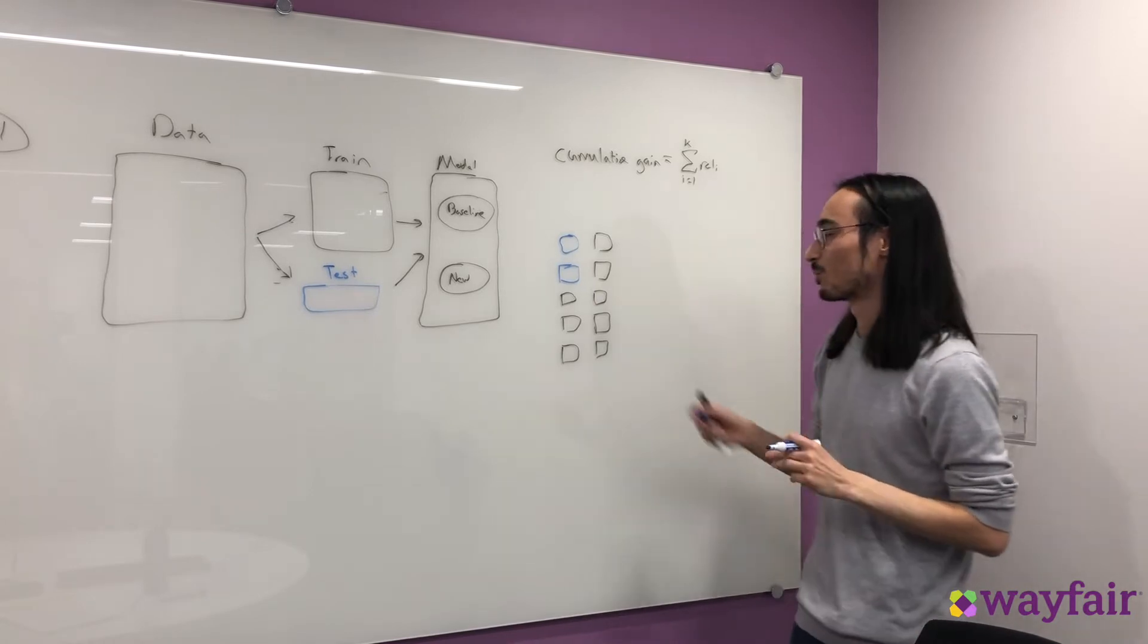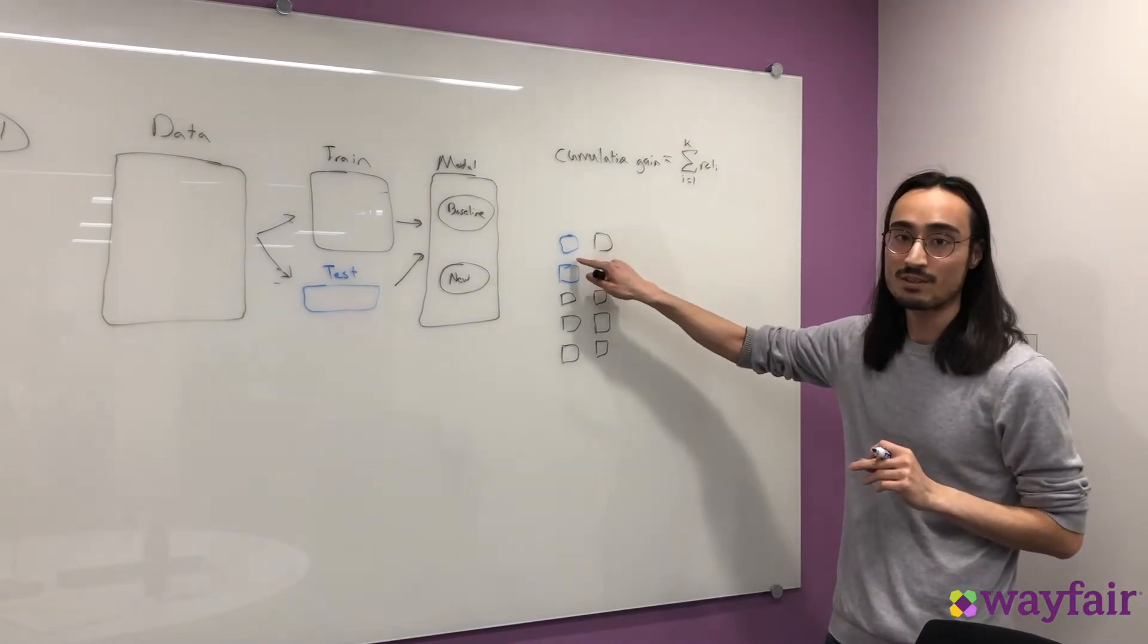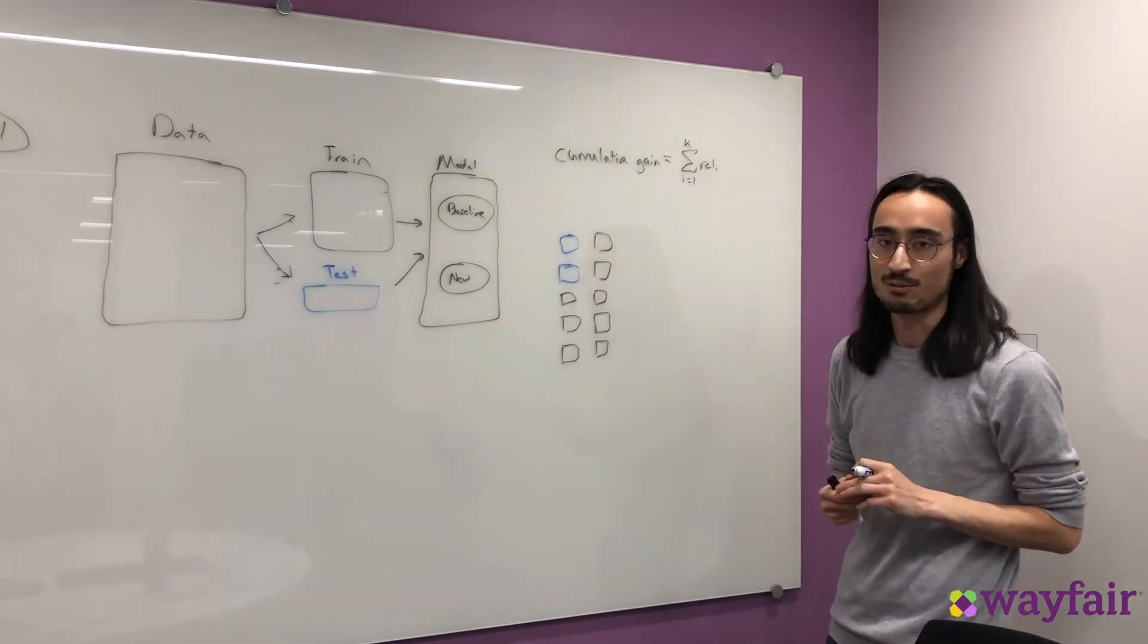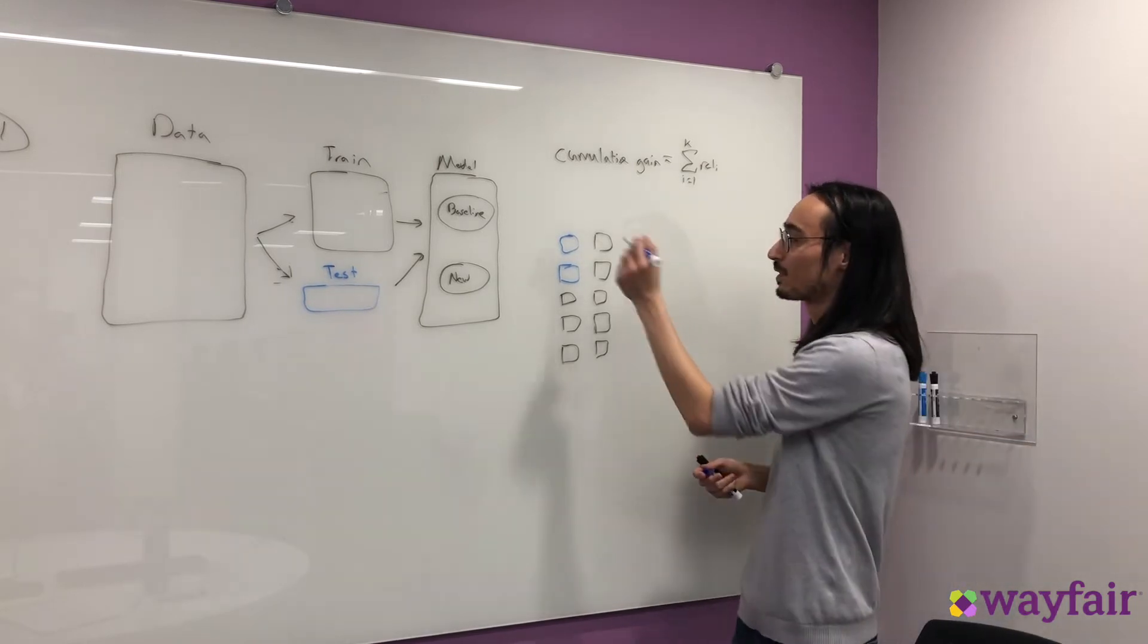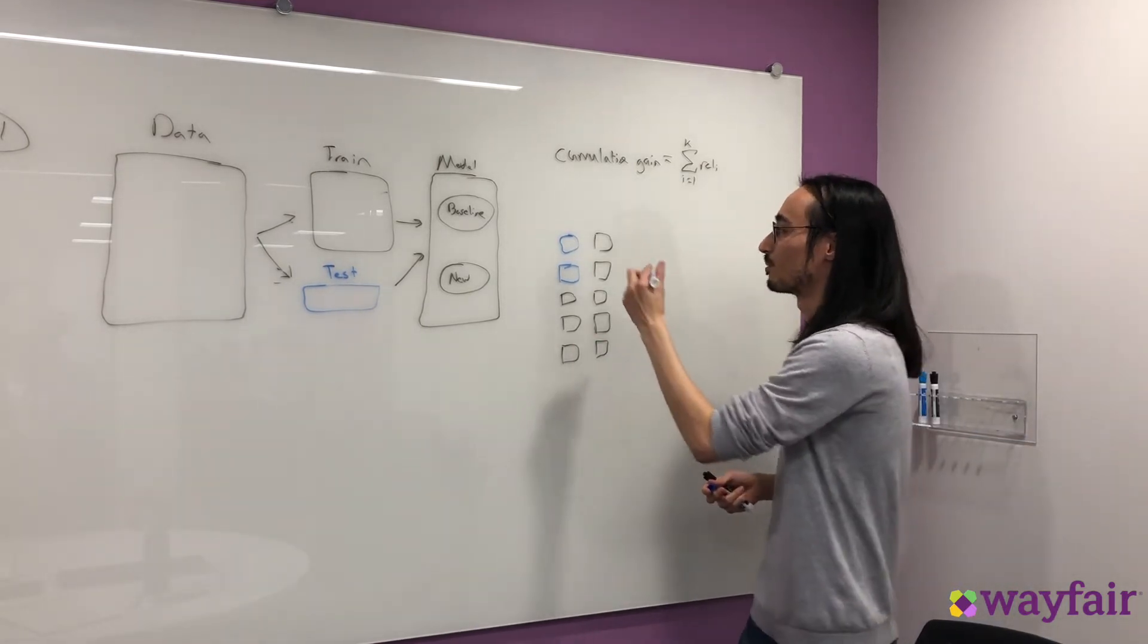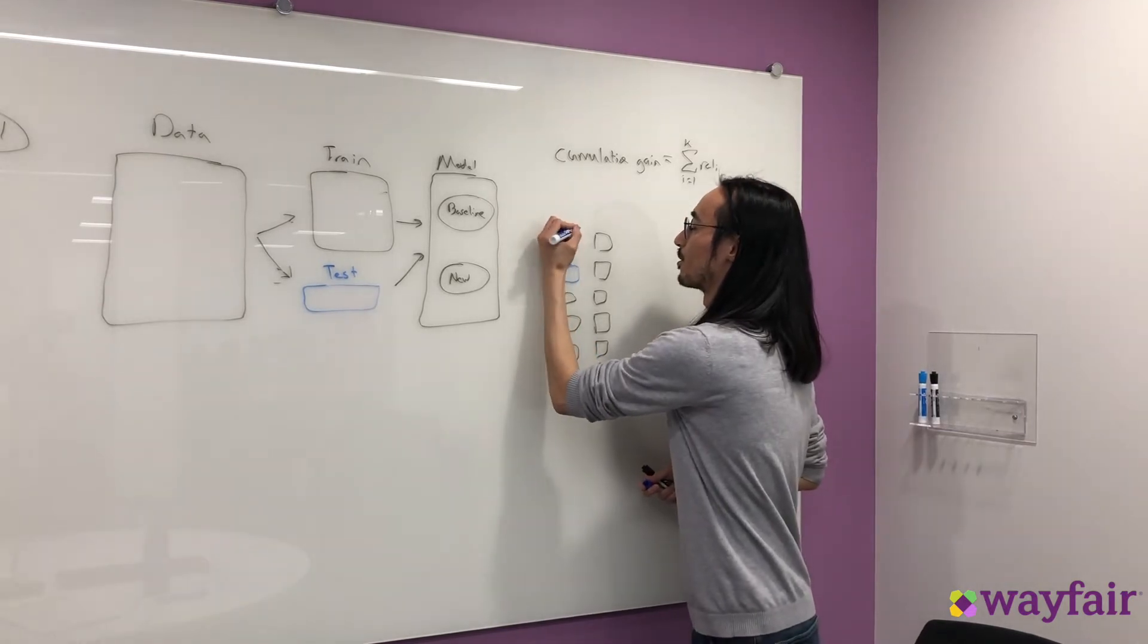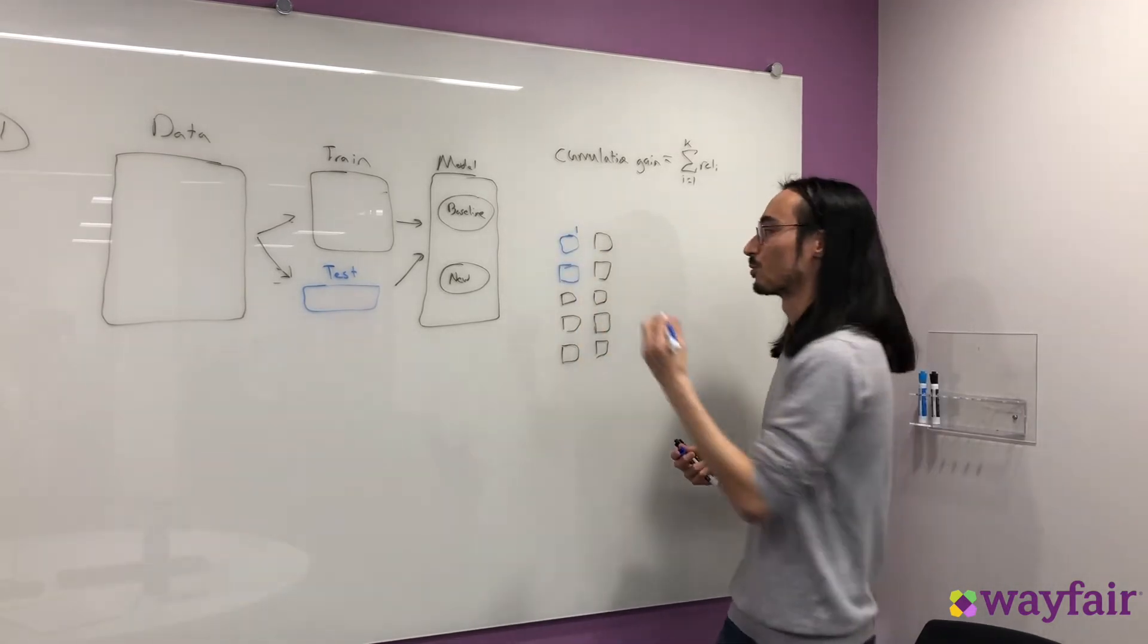In this example, they viewed the recommendation at position 1 and the recommendation at position 3. So if we take the relevance scores of each product in these positions, we find that for the product at position 1, the relevance score is 1.